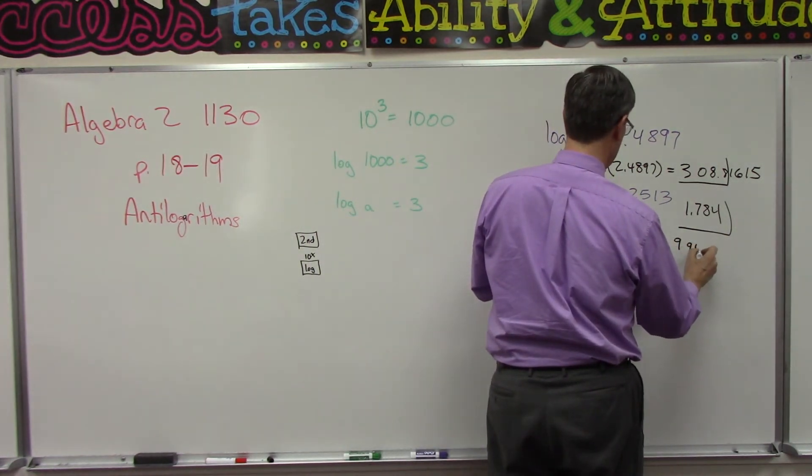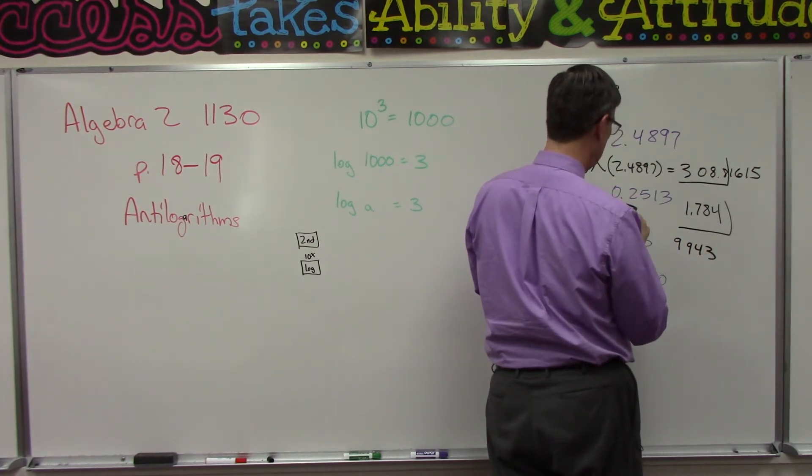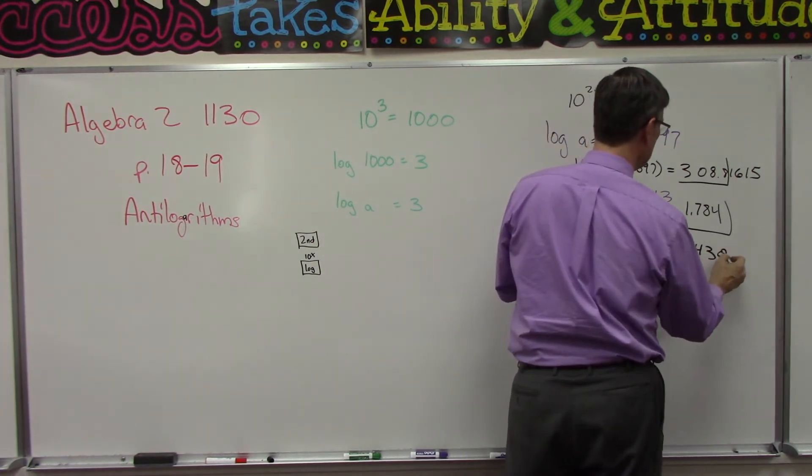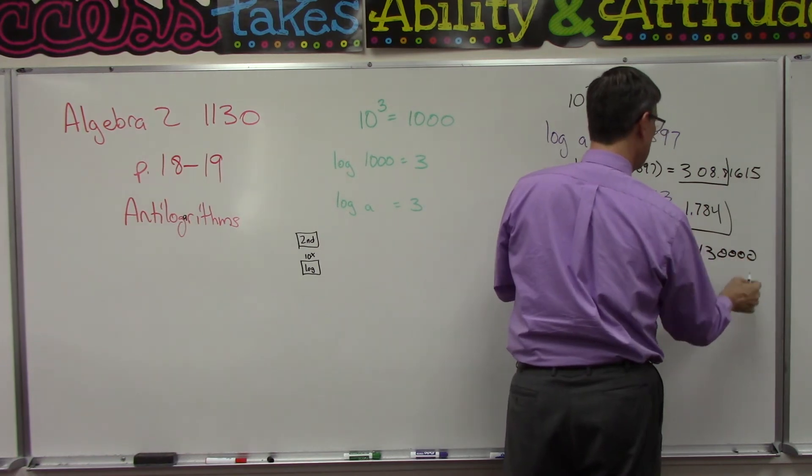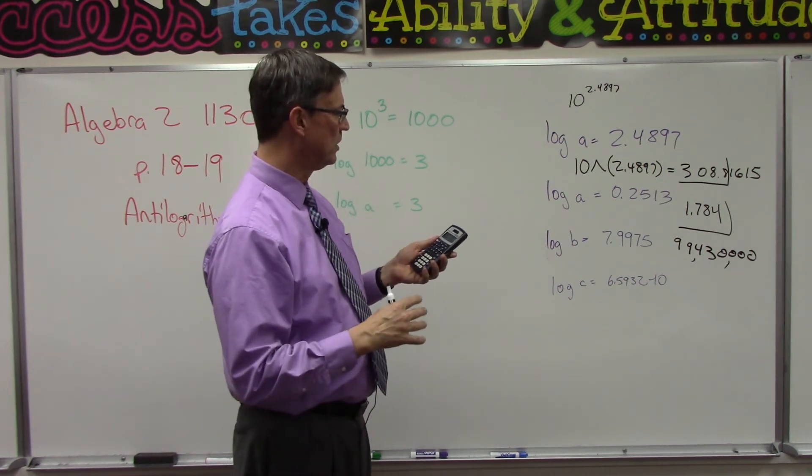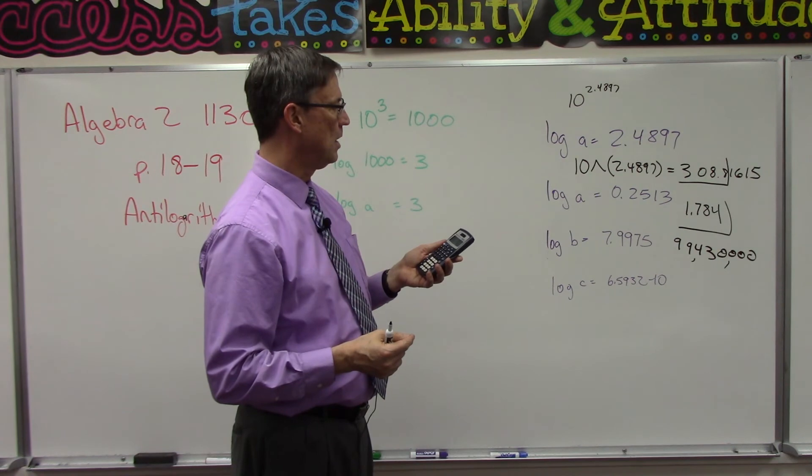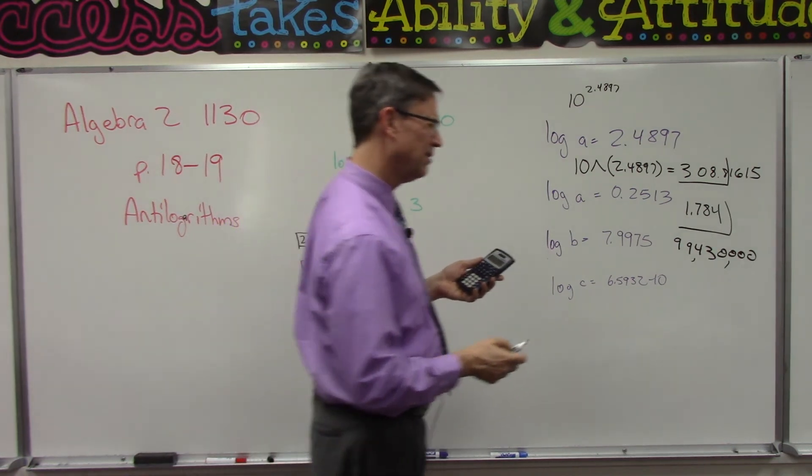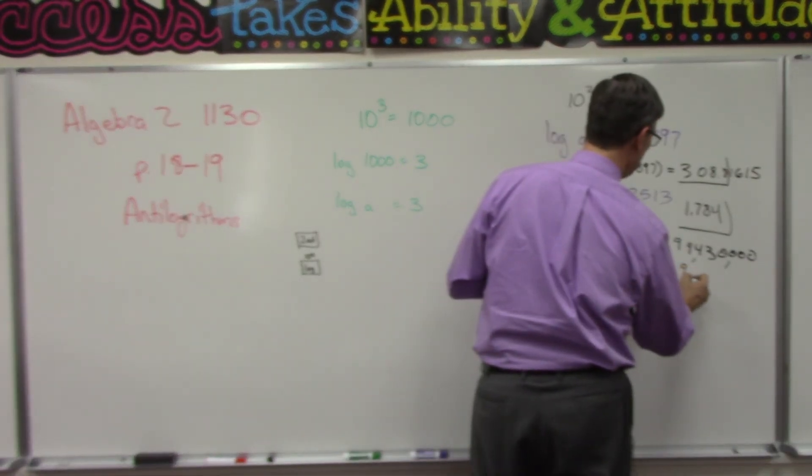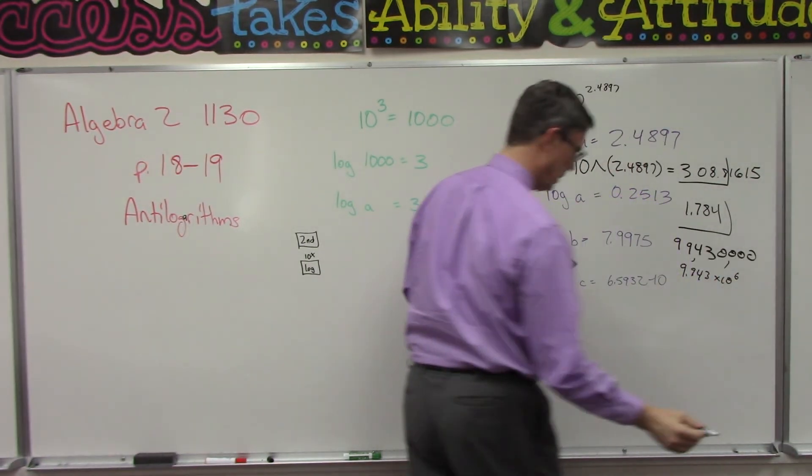99,430,000. One, two, three, four zeros. One, two, three, four. I'm guessing that's what they're going to do in the score key. Four digits, and then maybe they'll write it in scientific notation: 9.943 times 10 to the sixth. I'm not sure on that. 9.943 times 10 to the sixth. Would they do that?